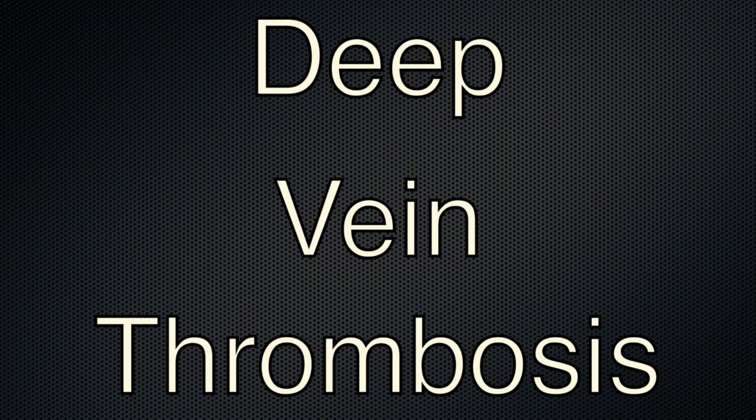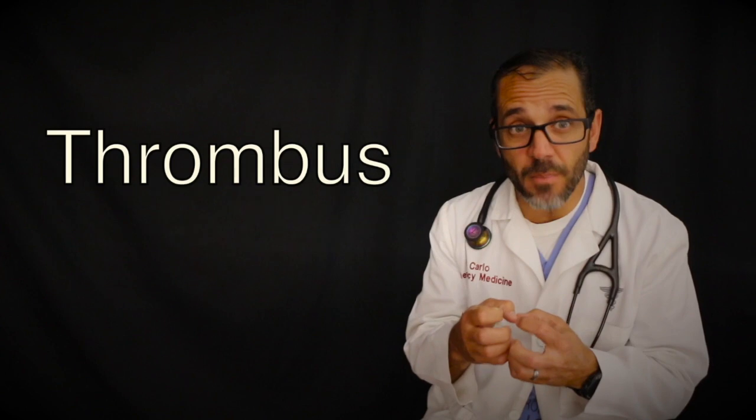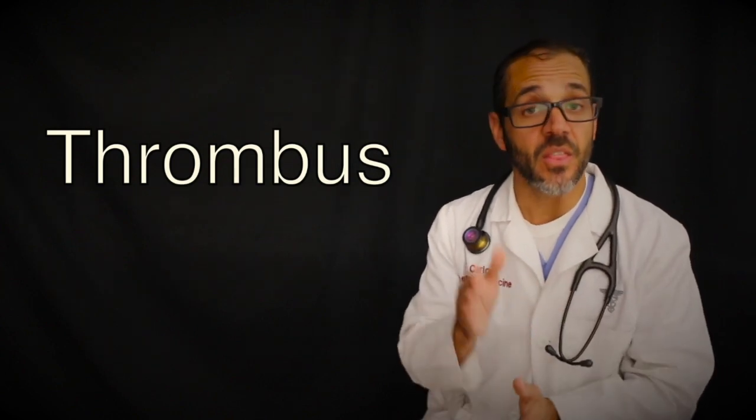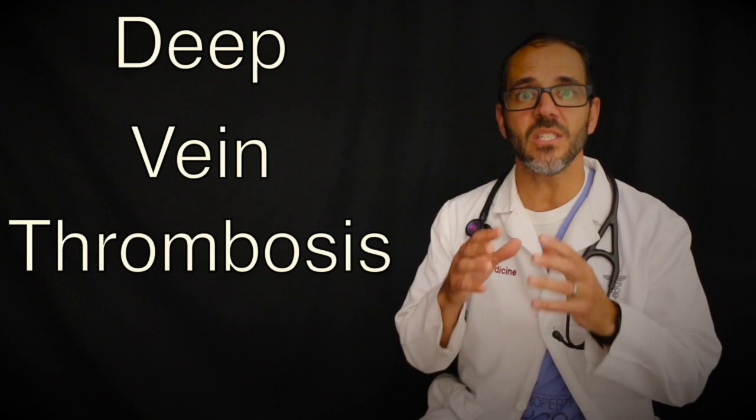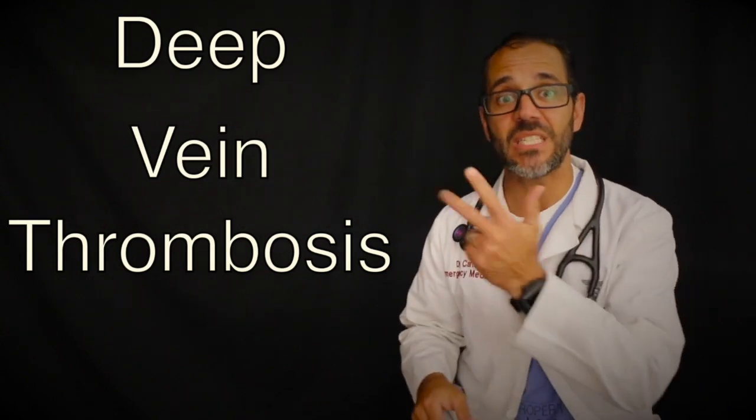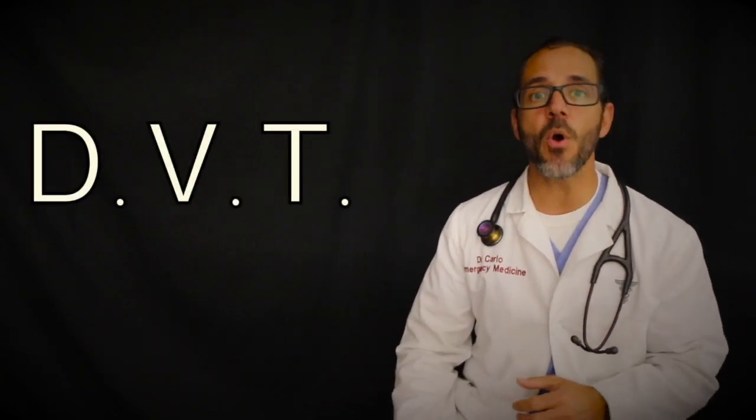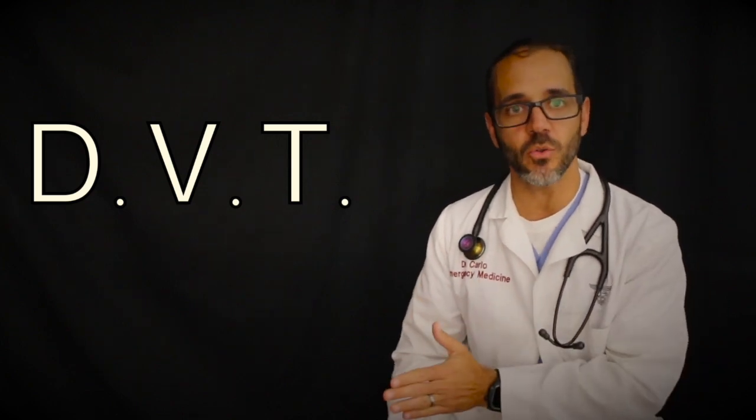Venous thrombosis is a condition in which blood clot or a thrombus forms in a vein. This clot can limit the blood flow through that vein causing swelling and pain on the area distal to the clot. Most commonly venous thrombosis occurs in the deep veins in the legs, thighs and pelvis. This is called a deep vein thrombosis or DVT.